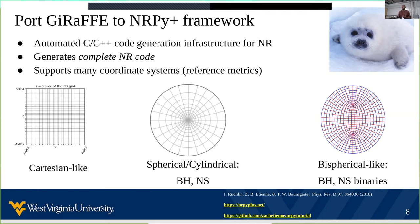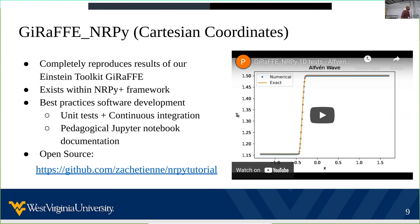These specific coordinate systems are very well suited for modeling either isolated compact objects or even compact object binary systems. This work has already been done by my collaborator Patrick Nelson in the form of Giraffe NRPy. Giraffe NRPy is housed entirely within the NRPyPlus framework and completely reproduces the results of the Einstein Toolkit version of the code. It also incorporates best practices of software development such as unit testing, continuous integration, and extensive Jupyter notebook documentation. It is completely open source and can be found at the link shown.